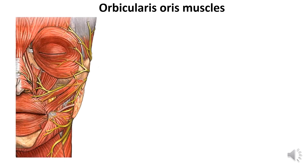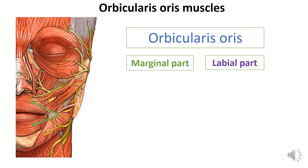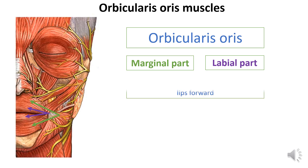The orbicularis oris consists of two parts: the marginal and labial parts. The marginal part is formed by muscle bundles that run to the upper and lower lips from the surrounding mimic muscles closer to the mouth. The labial part lies in the thickness of the upper and lower lips. Both parts are woven into the skin and mucous membrane and are connected to each other at the mouth angles. The orbicularis oris closes the mouth and pulls the lips forward.